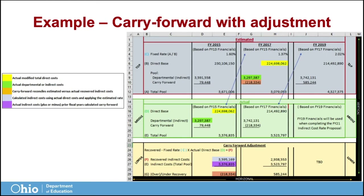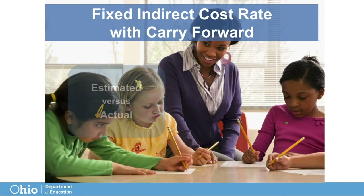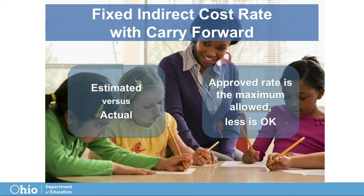And finally, highlighted in orange is the difference between the indirect cost recovery and the actual indirect costs. The carry forward calculation Ohio has selected for use is quite comprehensive. However, this method eliminates the need for districts to file amended federal reports when their actual indirect costs vary from the estimated indirect costs. The fixed rates approved are the maximum a district may use to allocate indirect costs. Your district may decide to minimize the amount of indirect cost recovery charged to any or all federal projects.